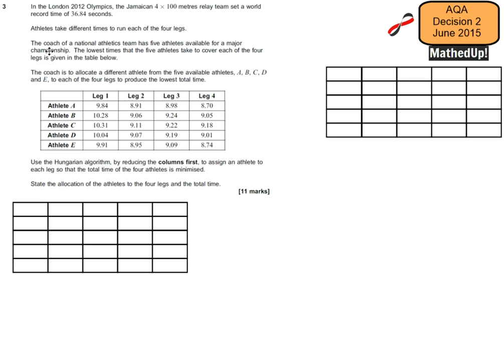The coach of a national athletics team has five athletes available for a major championship. The lowest times that the five athletes take to cover each of the four legs is given in this table over here.